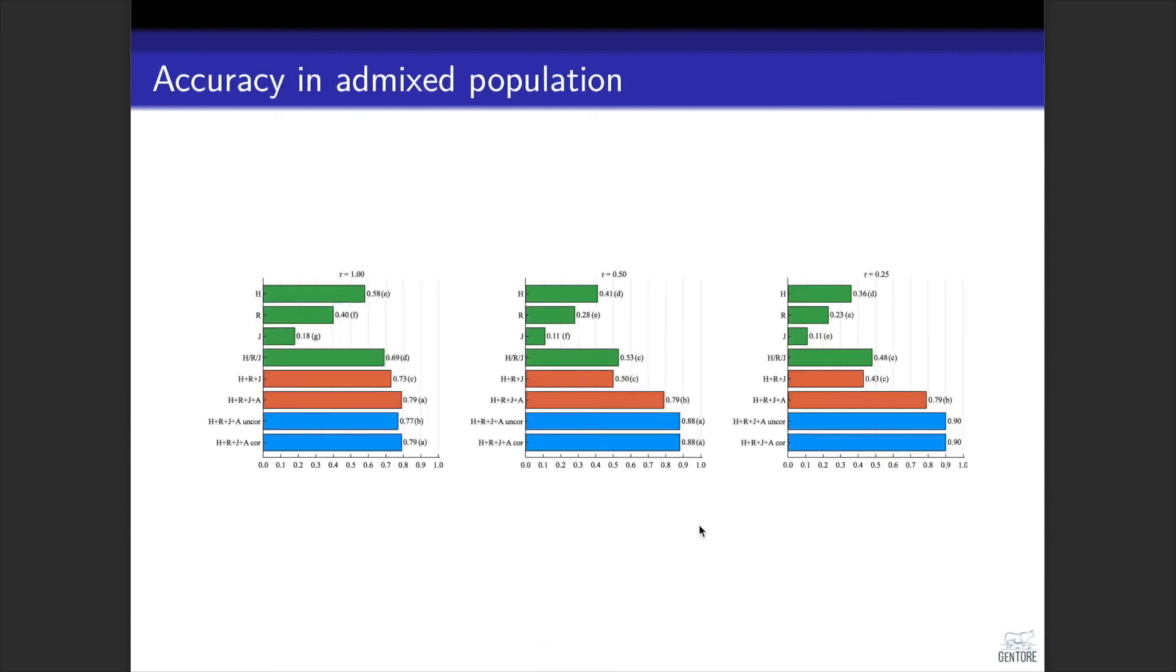When we looked at the accuracies in admixed population, we see that they actually represent the recent relationships, because Holstein was the sire breed for this admixed population, for the validation population. And the grandsires were from the Red and so on. So these trends here represent the relationships of admixed individuals to these pure breeds.